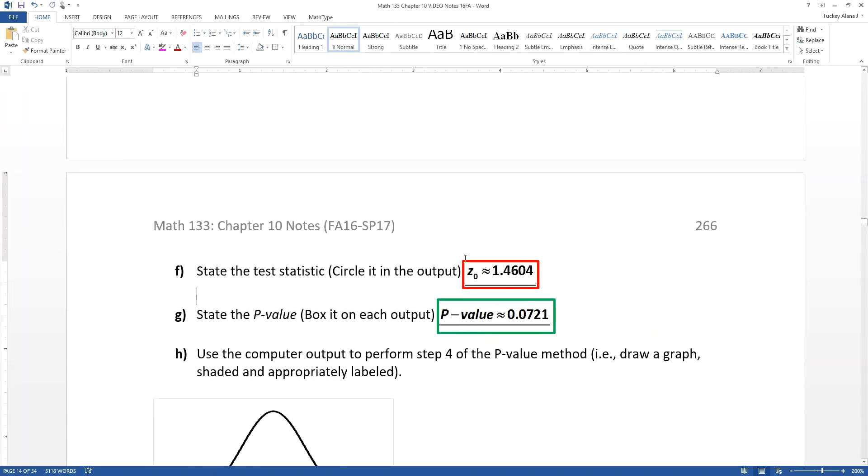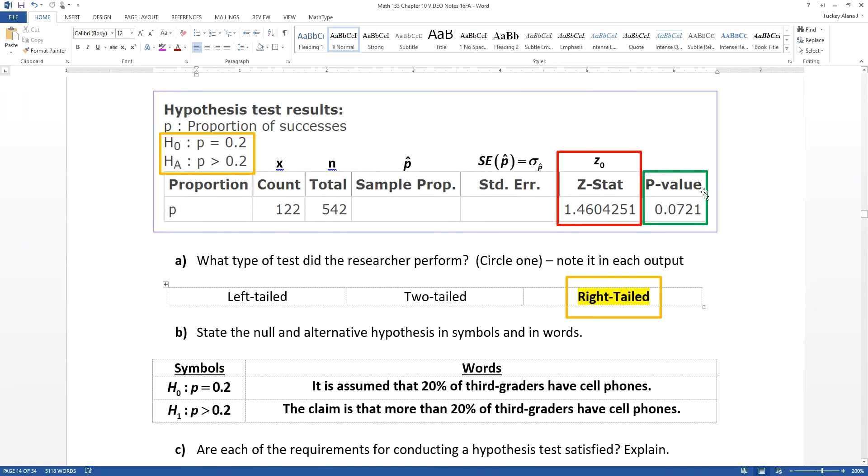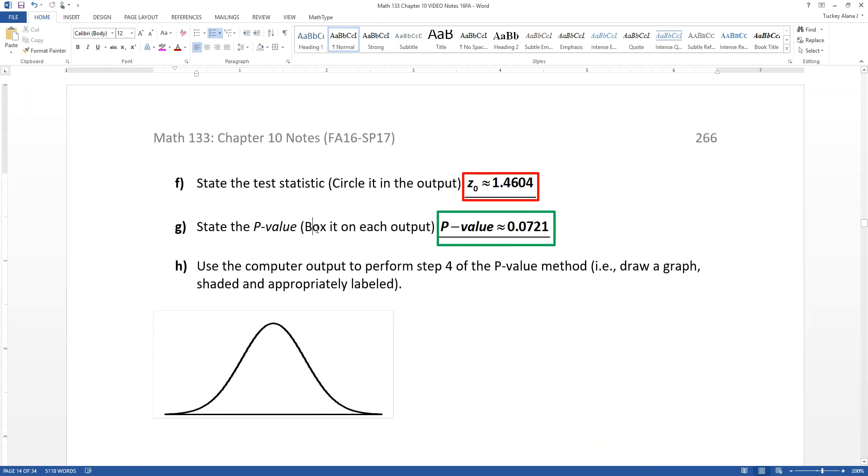So I've boxed that and the p-value. I boxed the test statistic in red and the p-value in green so you could see them. So that test statistic 1.46, there it is in red, so that's the part they're looking for right here. And then the p-value is that 0.0721.